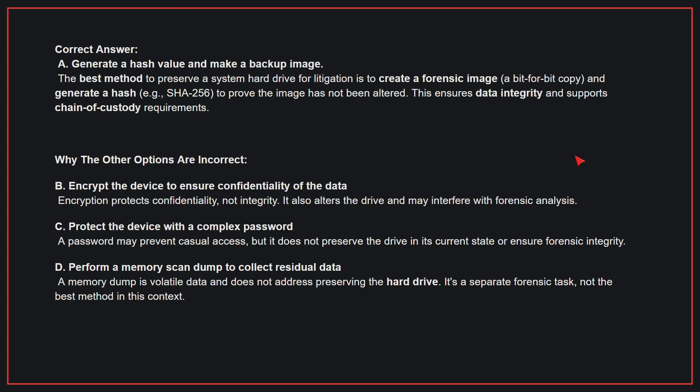Why the other options are incorrect: B — Encrypt the device to ensure confidentiality. Encryption protects confidentiality, not integrity, and also alters the drive, potentially interfering with forensic analysis. C — Protect the device with a complex password. A password may prevent casual access but does not preserve the drive in its current state or ensure forensic integrity. D — Perform a memory scan dump to collect residual data. A memory dump is volatile data and does not address preserving the hard drive; it is a separate forensic task. Therefore, the correct answer is A.